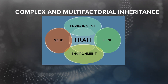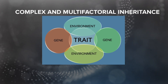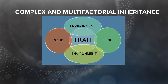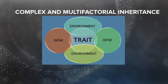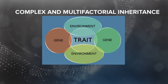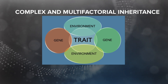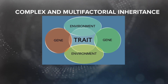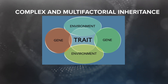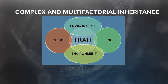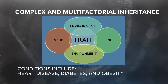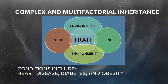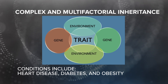Traits which come about as a result of the effect of multiple genes or gene-environment interactions are known as complex or multifactorial disorders. Although complex disorders often run in families, they do not have a clear pattern of inheritance, so it can be difficult to determine a person's risk of inheritance. Conditions that are complex or multifactorial include heart disease, diabetes, and obesity.